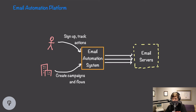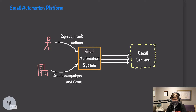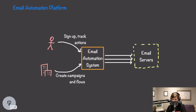In this video, we're going to be designing an email automation platform such as Klaviyo or MailChimp. At a high level, an email automation platform allows customers to sign up and track data, and allows companies to create automations that send emails to those customers. Our email automation is going to take in all the data from these customers and use that data to send emails out over the internet.